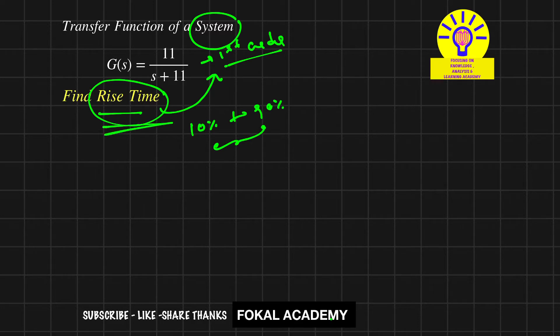The rise time is given by tr = 2.2 times the time constant. This is the standard formula for getting the rise time for a first order system. Now, how can you find the time constant?